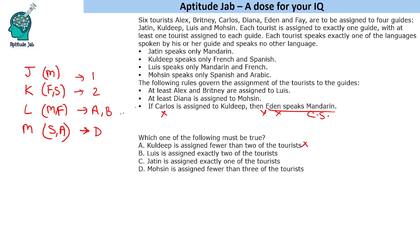The second option says Louis is assigned exactly two tourists. If there are three tourists left, we can assign one to Jatin, one to Kuldeep, and one to Mohsen — giving Louis three tourists. So that is not necessarily true. The third option says Jatin is assigned exactly one tourist. We can assign two people to Jatin, so that is also possible to falsify — we eliminate this option too.